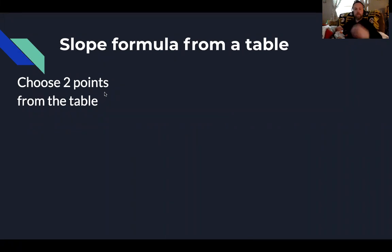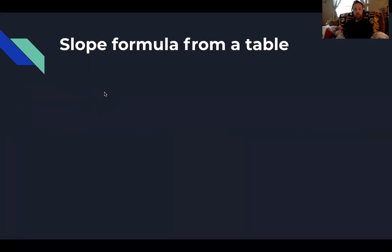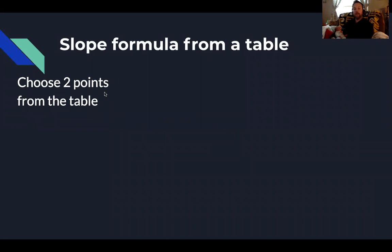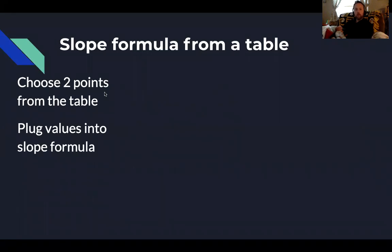So here are the steps we need to follow for pre-algebra. First, we choose two points from the table. For the tables I'm going to give you, the ones you're going to do for homework, those are all linear tables — they all result in a linear graph — so it can be any two points from the table. If I go back to the charts, I may say specifically what's the rate of change between 2004 and 2010, but it's all based on what the question is asking. We're going to choose any two points from the table, plug those values into our slope formula, and solve.